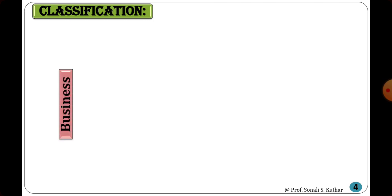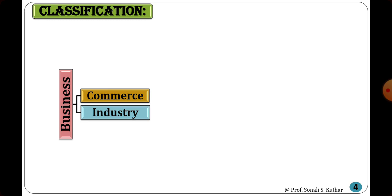Classification of Business: Business is basically divided into two types — first is commerce and second is industry. The activities of business are classified into commerce and industry. Production and distribution are the activities of business; commerce covers only distribution and industry covers only production. Collectively, production and distribution are known as business.